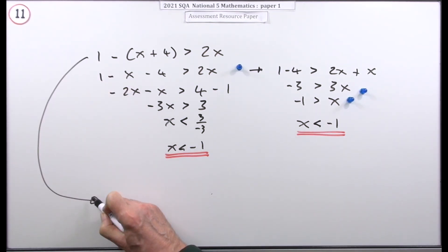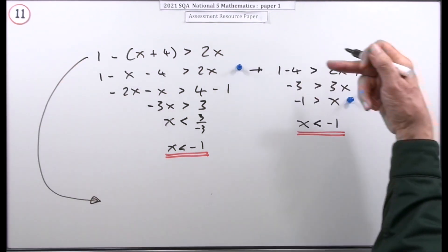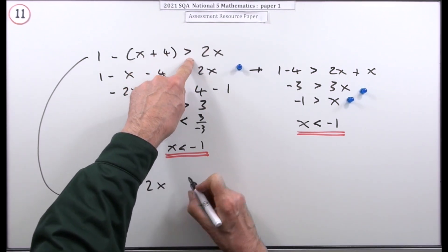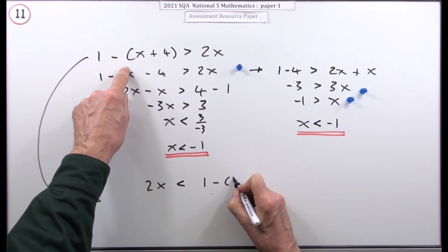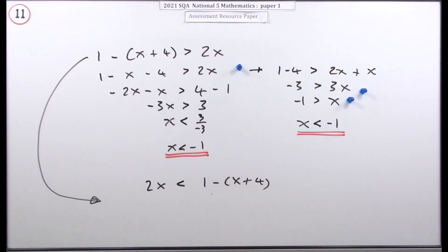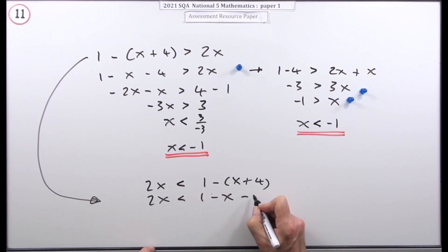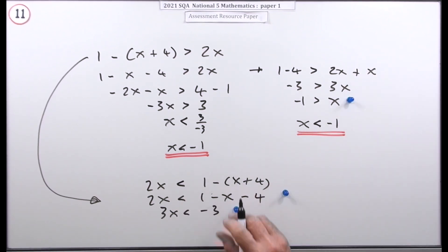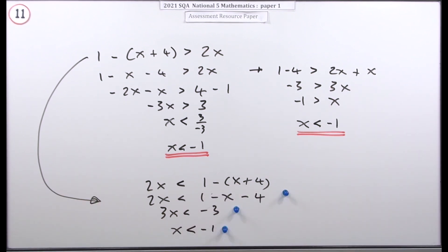A third approach: since you know the result will end up backwards, you could write the inequality the other way around from the start — 2x less than 1 minus (x plus 4). Then: 3x is less than negative 3, earning the second mark. Divide by 3 — no sign flip needed — so x is less than negative 1. There's the final mark.